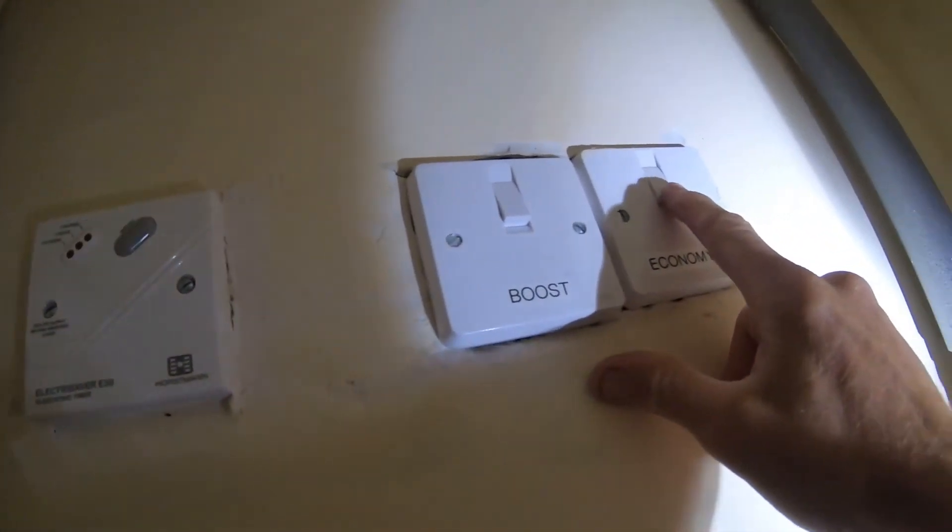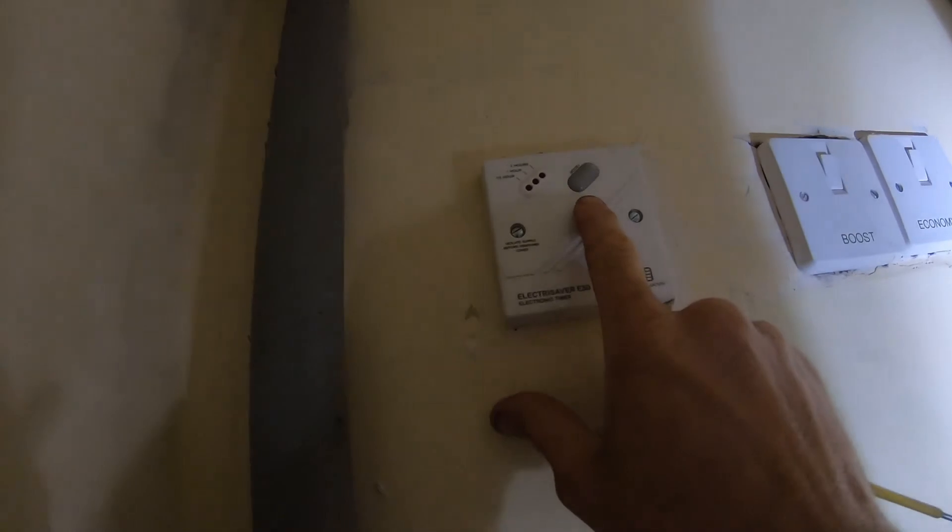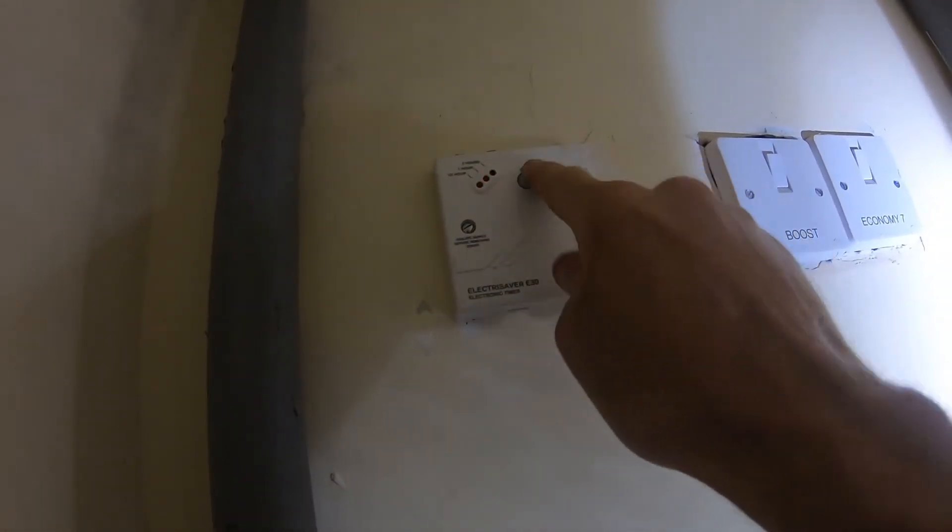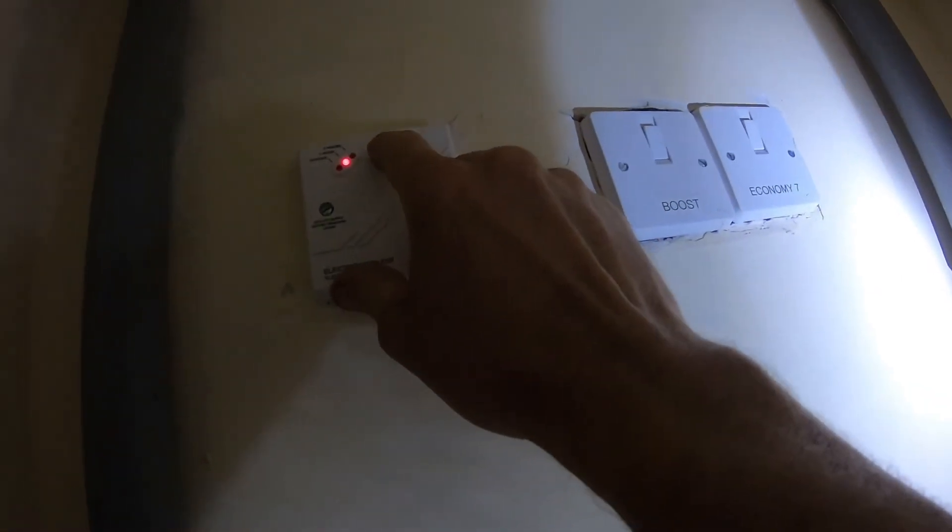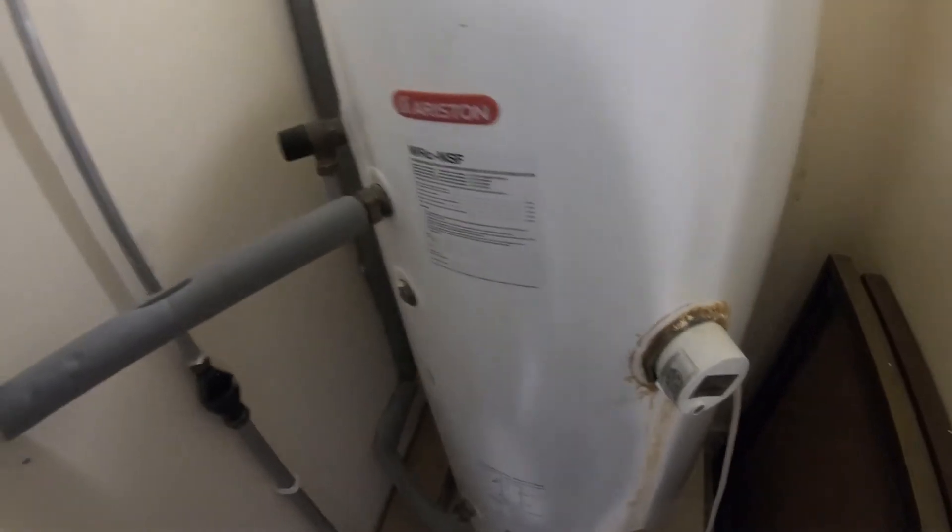Turn these two switches back on. That's the control for the economy seven - sorry, the boost - so you can set half hour, one hour, or two hours, and that'll just supply this top one to warm half the tank. I think I'll put that on now until you get a bit of hot water. And finally, just reset this MCB and that's it. That will be working now.